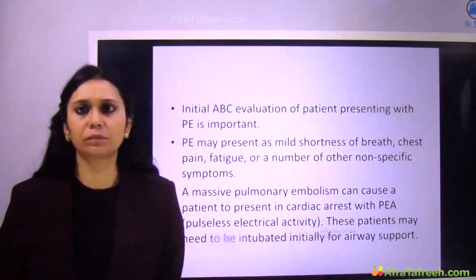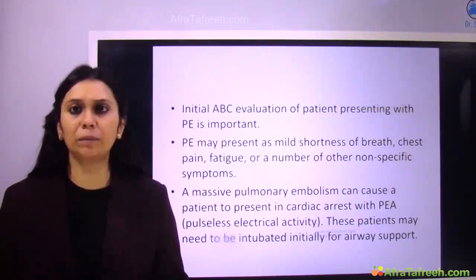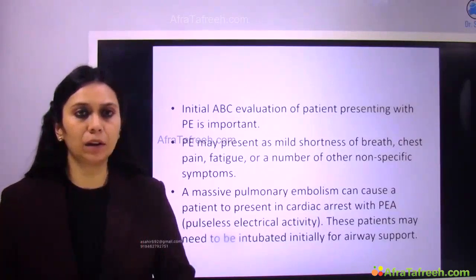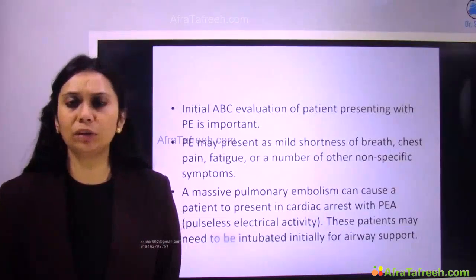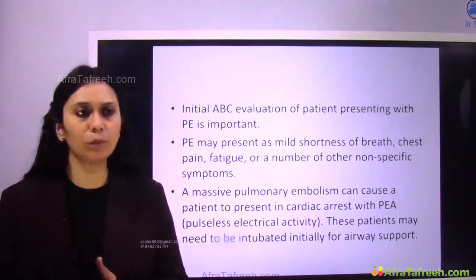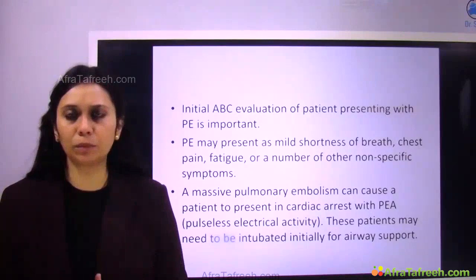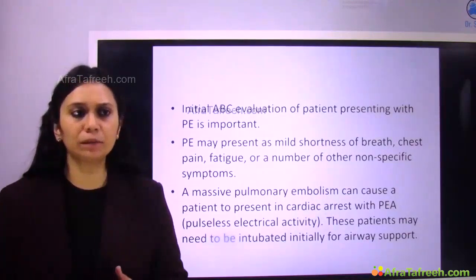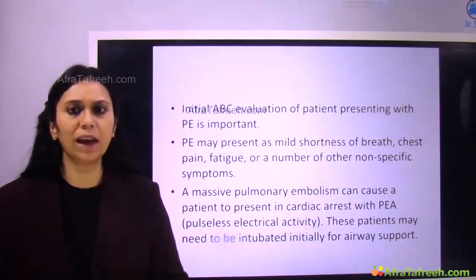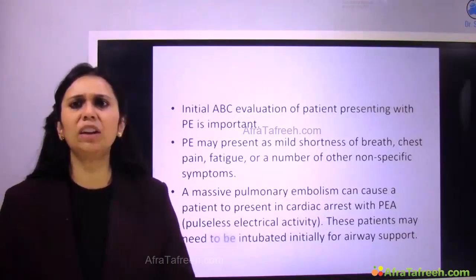A deep vein thrombosis patient would not come in unstable for airway, breathing, and circulation, but a pulmonary embolism patient can present as an unstable patient. In a primary survey, initial stabilization for pulmonary thromboembolism requires ABC evaluation first. Pulmonary embolism patients present with shortness of breath, dyspnea, chest pain, fatigue, and other non-specific symptoms.